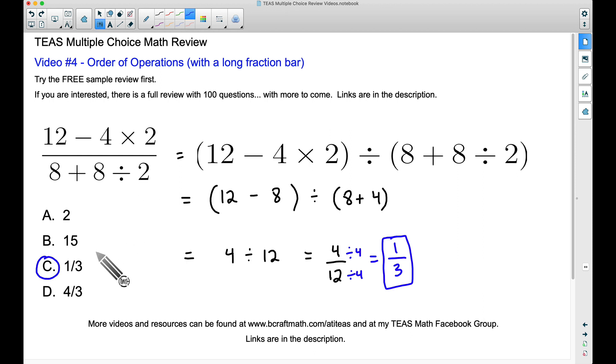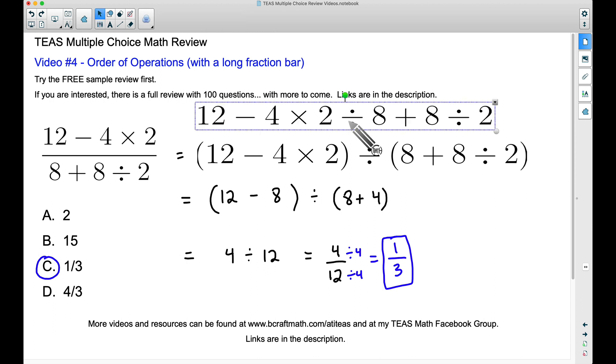Now these other answer choices are answer choices that you could possibly get had you done it incorrectly. For example, if you had evaluated it this way using the order of operations, but not taking note of the groups, the top part and the bottom part, you would have ended up getting 15 there. And that's the point I want to drill home here.